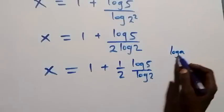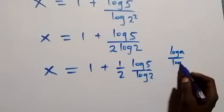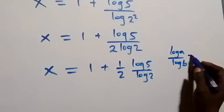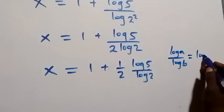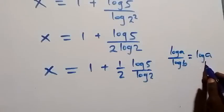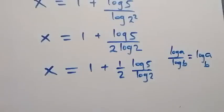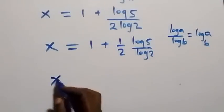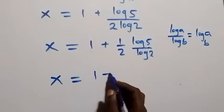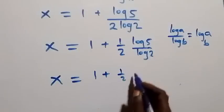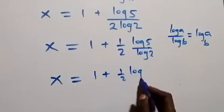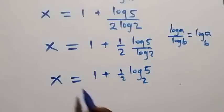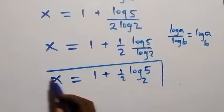Using the change of base formula — log a over log b equals log a to base b — the expression log 5 over log 2 becomes log 5 to base 2. Therefore, the final solution is x equals 1 plus half log 5 to base 2.